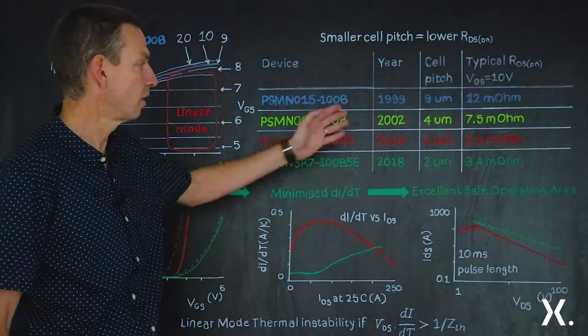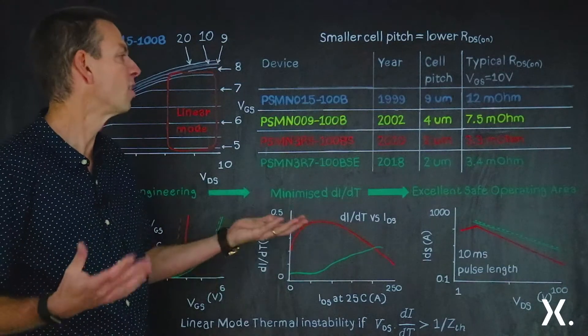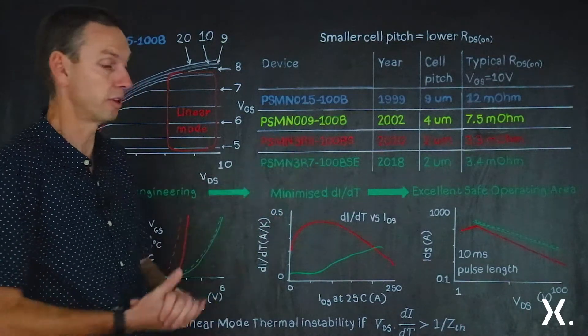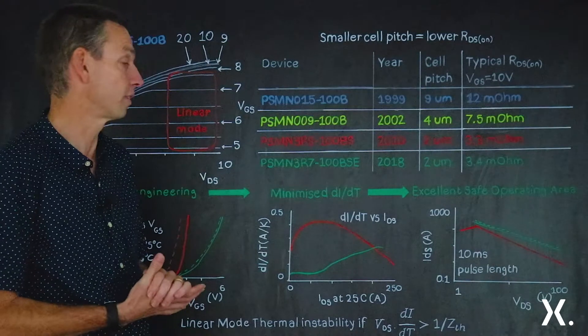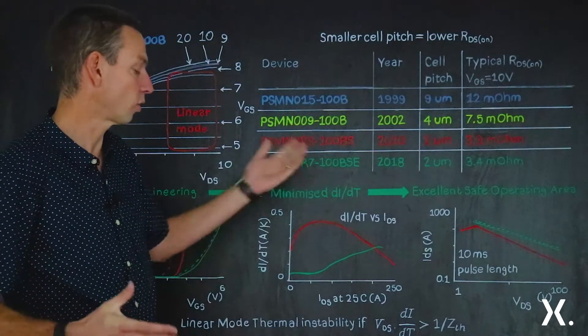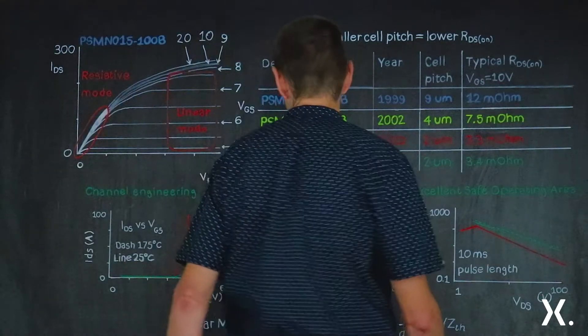So on that basis, we'd expect it to have the same safe operating area, the same reduced safe operating area that the red PSMN-3R8-100BSE had. But that's actually not quite the story, so I want to show you some of the characteristics from this device.